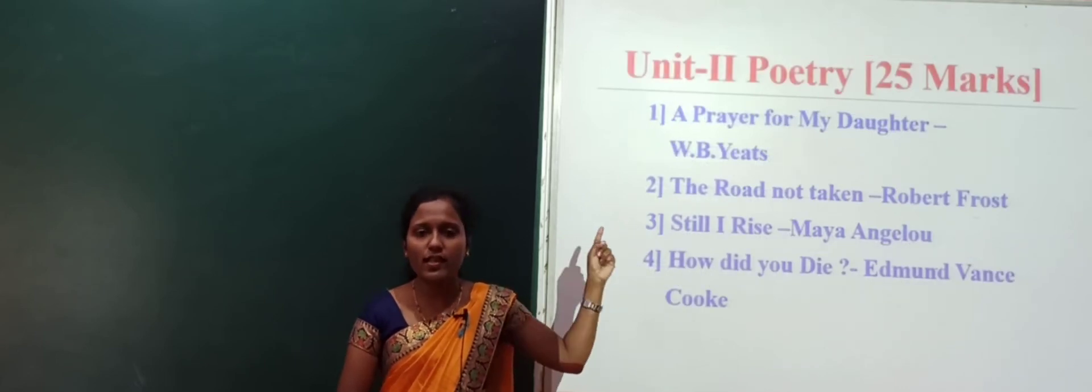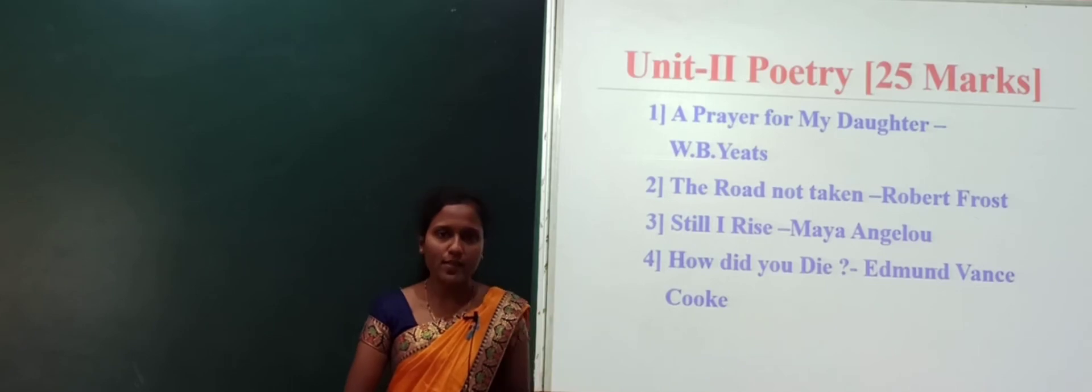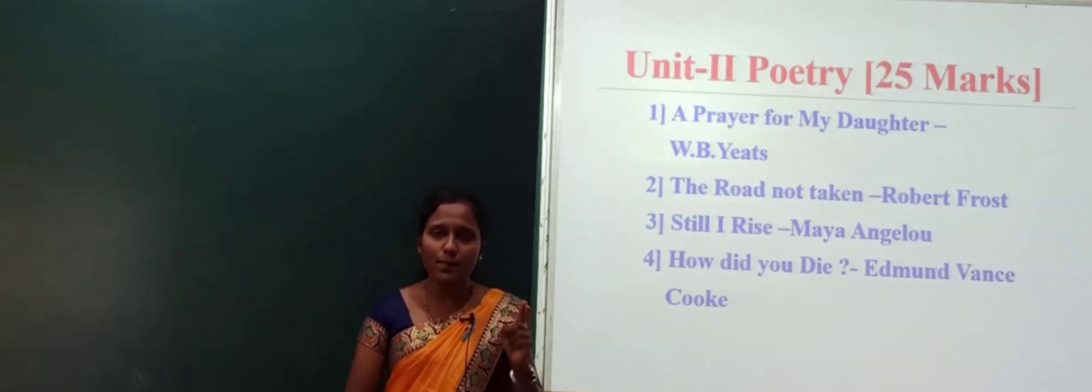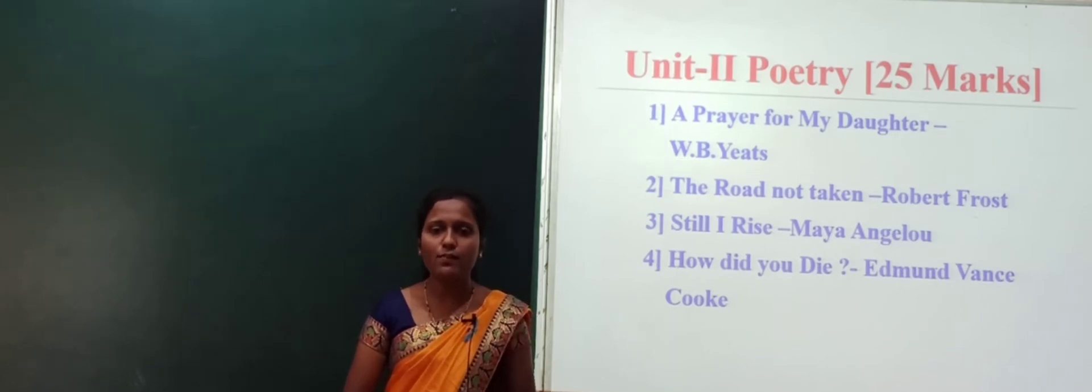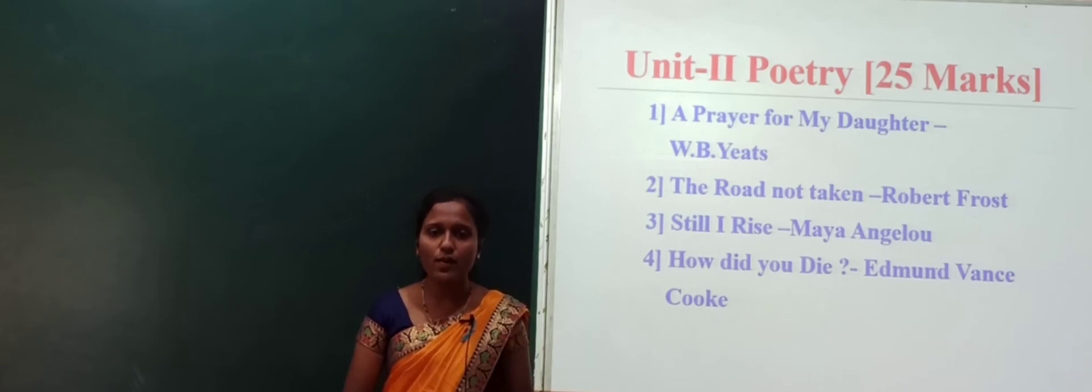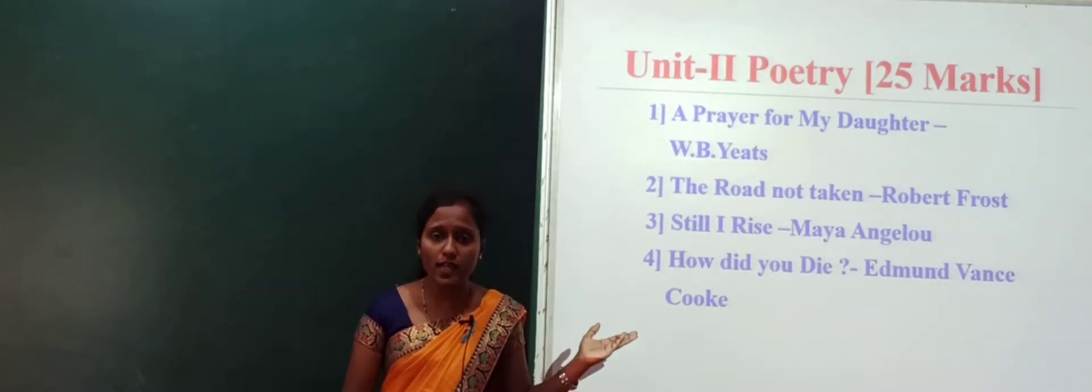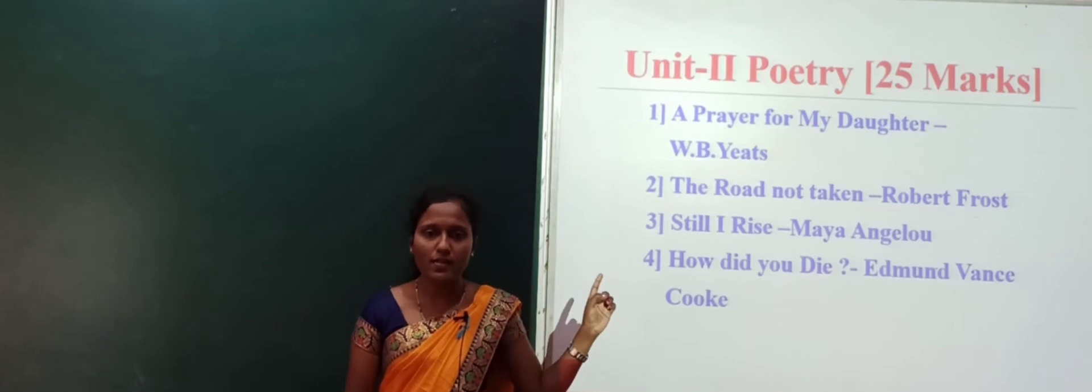In unit second, you are going to study poetry. This poetry also contains 25 marks. Which poems you are going to learn: first poem, A Prayer for My Daughter, written by W.B. Yeats. Second, The Road Not Taken, a poem written by Robert Frost. Third, Still I Rise, written by Maya Angelou. And fourth, How Did You Die, written by Edmund Vance Cook. These are four poems you will study in unit second for 25 marks.